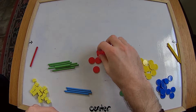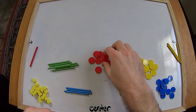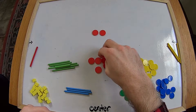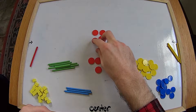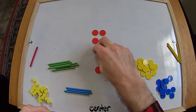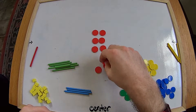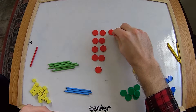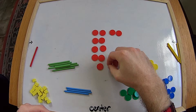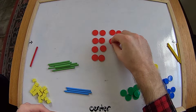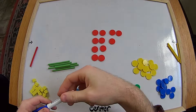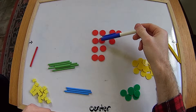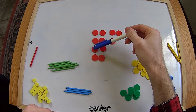Let's start with these red counters. I'm going to spread them out to make them nice and easy to count and we'll see how many we have. So we've got one, two, three, four, five, six, seven, eight, nine, ten, eleven.